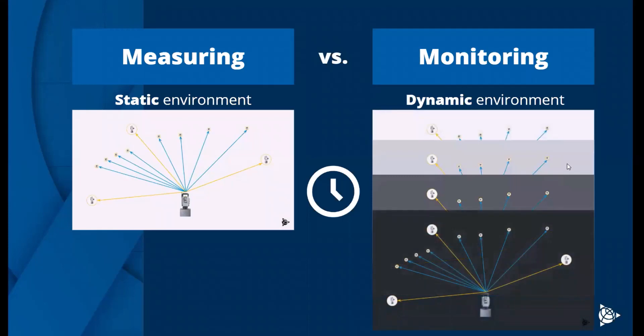When we're doing monitoring, we're measuring the same series of targets but in a dynamic environment. What that means is anything could be changing on site. Usually the atmosphere is changing, so the temperature, pressure, humidity, and things like that, so the medium we're measuring through changes.